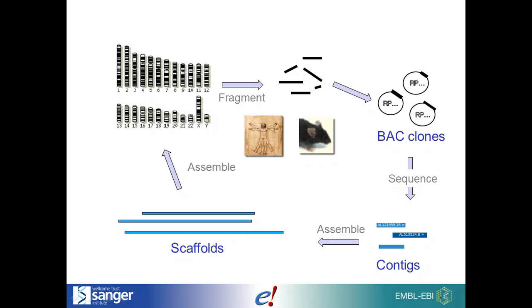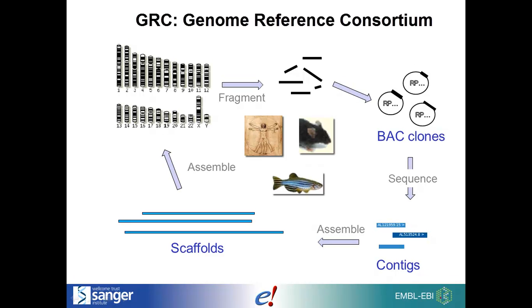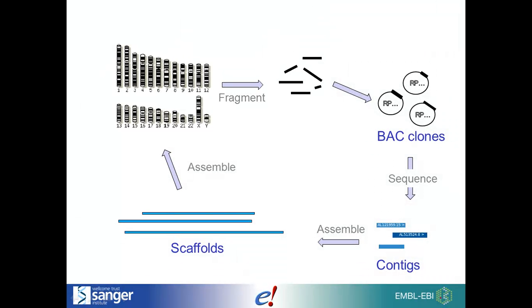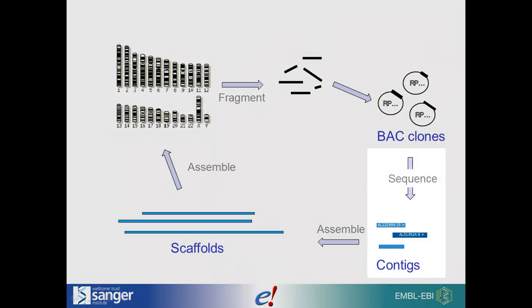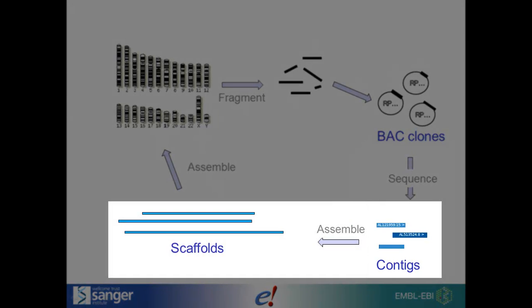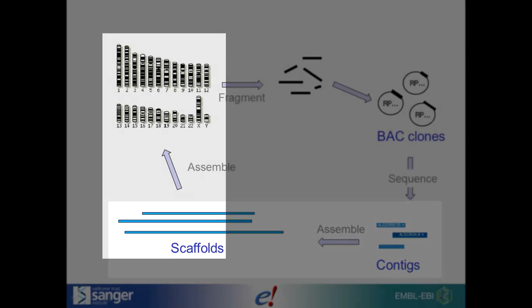For human, mouse and zebrafish, the genome assemblies are maintained by the Genome Reference Consortium. When a genome is sequenced, the DNA is first fragmented into small pieces. After sequencing, these pieces have to be reassembled. Where the short pieces can be assembled into a contiguous sequence, they form contigs. The GRC assembles the contigs into scaffolds and in turn the scaffolds into chromosomes, leaving gaps where necessary.